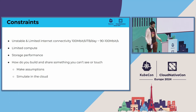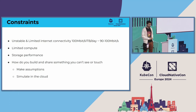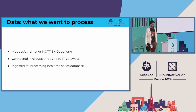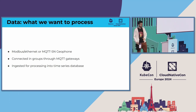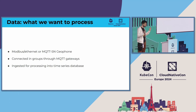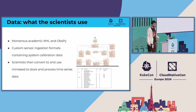So we have bandwidth limitations, compute limitations, and the basic problem that I had to speak to an IT department without knowing what compute they had — simulating based on assumptions, with two weeks to deploy in an environment I didn't know. What we'd ideally like: Modbus Ethernet, MQTT-SN going to an industrial MQTT gateway, then to a time-series store on the cloud — which you can't do here.